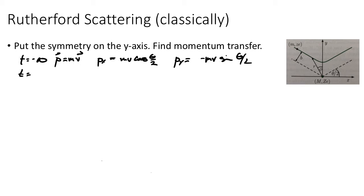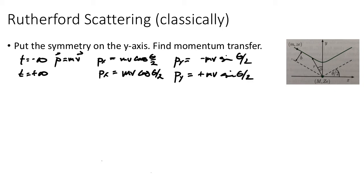At plus infinity, P_x recovers its same value, and the y-component has exactly reversed itself. So the total change in momentum from minus infinity to plus infinity is 2mV sin(θ/2), going from −mV sin(θ/2) to +mV sin(θ/2). Angular momentum is conserved: L = p × r = mVB, where B is the impact parameter.